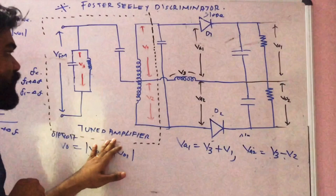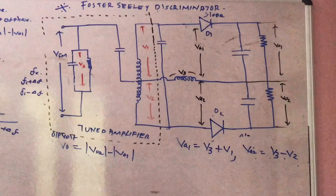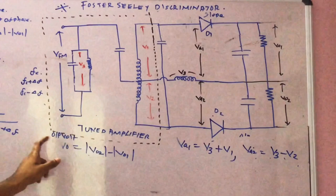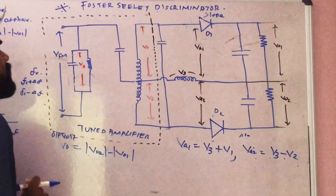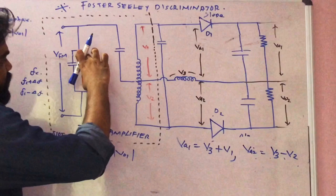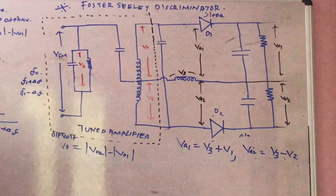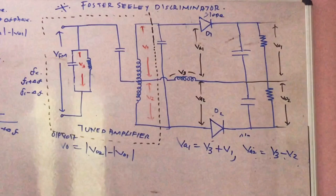There are two parts in this circuit. The first part is a tuned amplifier. The second part is a balanced slope detector. In the tuned amplifier, we have an FM input, an input capacitor, and the voltage is V3. There is also a radio capacitor and a tuned amplifier stage.